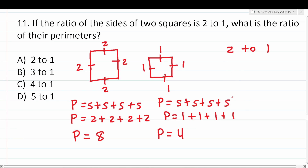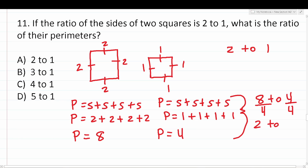The ratio of their perimeters is 8 to 4. We can reduce by a common factor of 4: 8 divided by 4 is 2, and 4 divided by 4 is 1. So the ratio of the perimeters of these two squares is 2 to 1. The answer is A: 2 to 1.